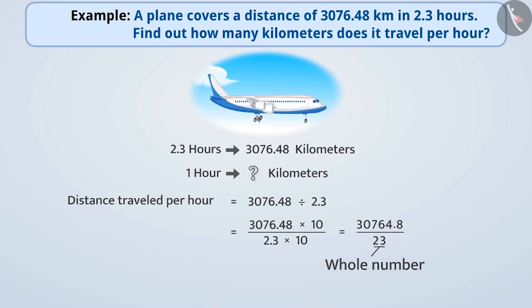In summary, we can say that if the decimal point of the numerator and the denominator is moved one place to the right, then we get a whole number in the place of the denominator. Now we can divide 30764.8 by 23. Let us solve this using long division method.